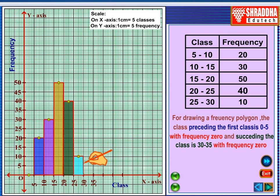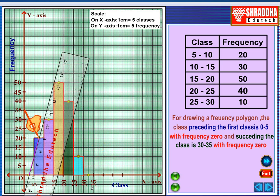Last, 30 to 35. Midpoint will be here and the Frequency will be 0.